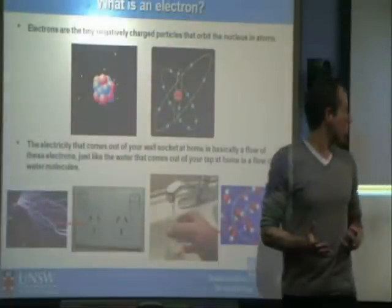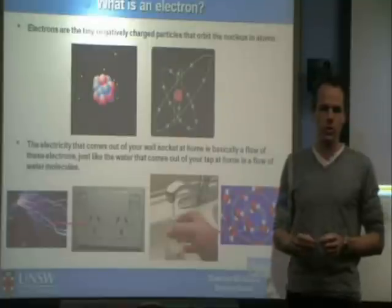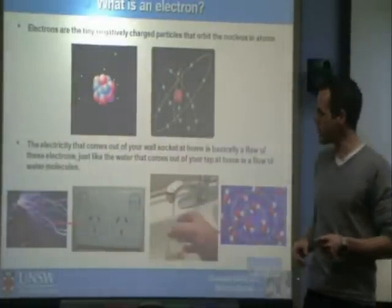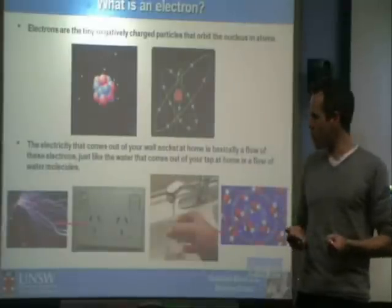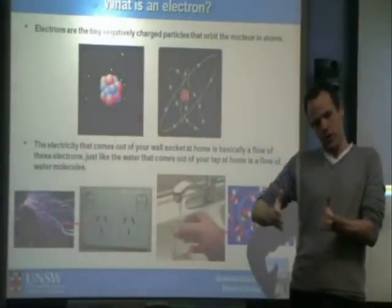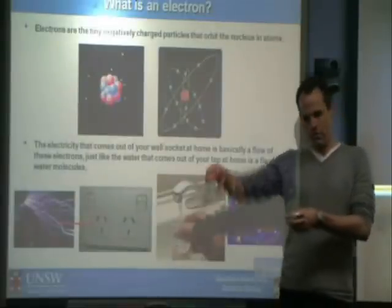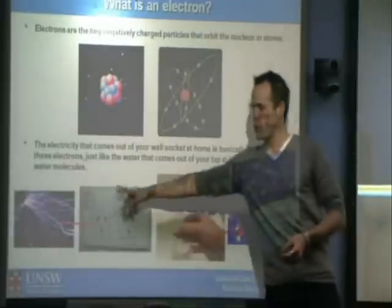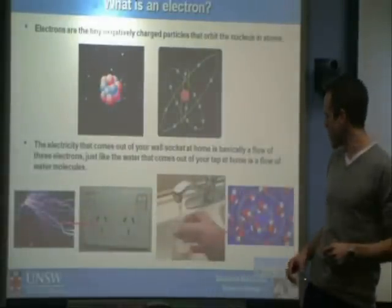I'll start out with what an electron is, just to make sure we're all in the same place. Electrons are the tiny, negatively charged particles that go around nuclei in atoms. It's exactly the stuff that comes out of the wall socket at home when you turn the power on. A good analogy is to compare it to water — you turn on the tap, water comes out as water molecules. With electricity, you turn on the switch, and out comes electrons as a stream, much like water does.